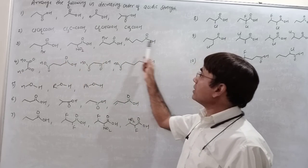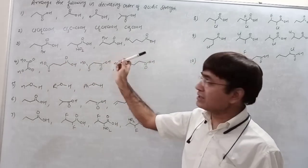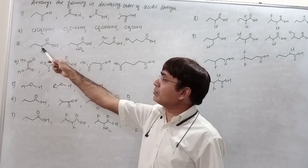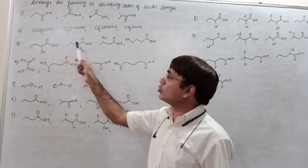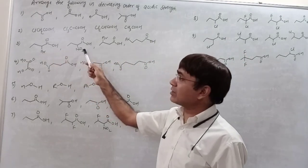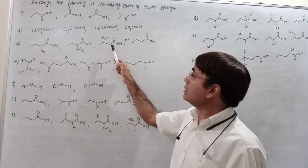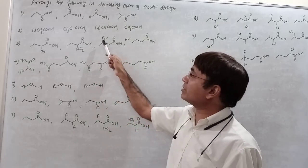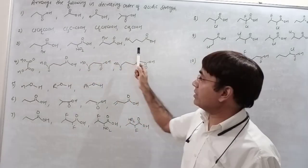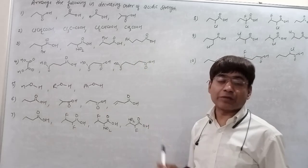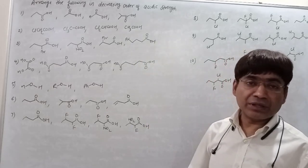In question number 3, this is butanoic acid. This is carbon number 2, carbon number 2, this is NO2, this is carbon number 3, this is carbon number 4, and this is bromine.